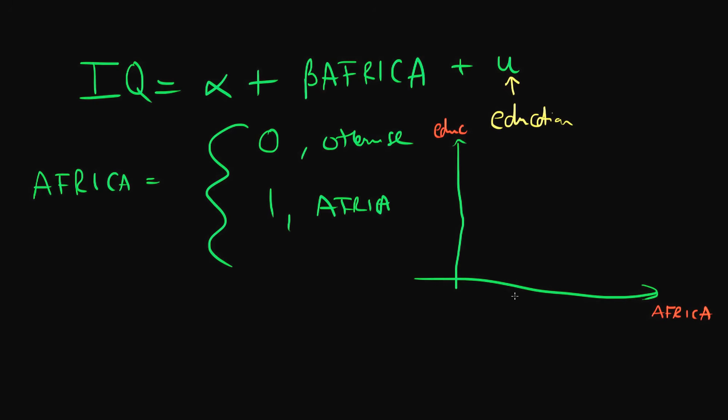Our Africa dummy variable takes on two values: 0 if the individual isn't from Africa and 1 if they are from Africa. We can think that the spread of education levels in Africa is likely going to be centered around a lower average value than in developed countries. So there is likely going to be a negative correlation between an individual's level of education and whether they are from Africa.